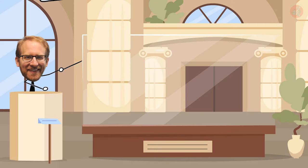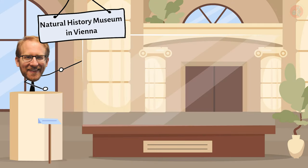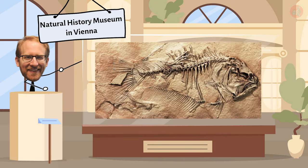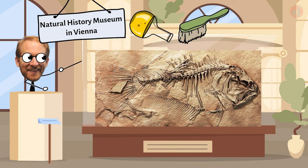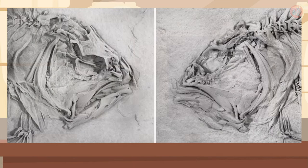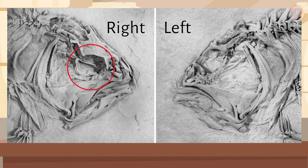Friedman then discovered another unidentified fish fossil at the Natural History Museum in Vienna. He carefully applied hydrochloric acid to restore its original form, and found that, like in this photo, while the right eye was in a normal position, the left eye was located toward the top of the head.